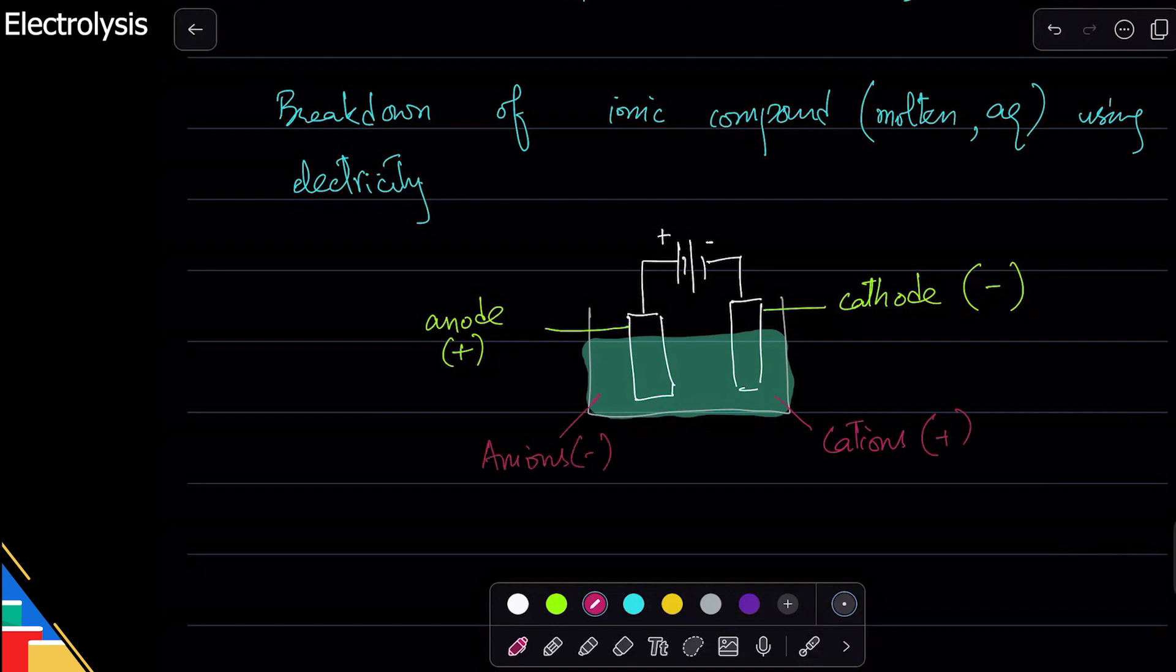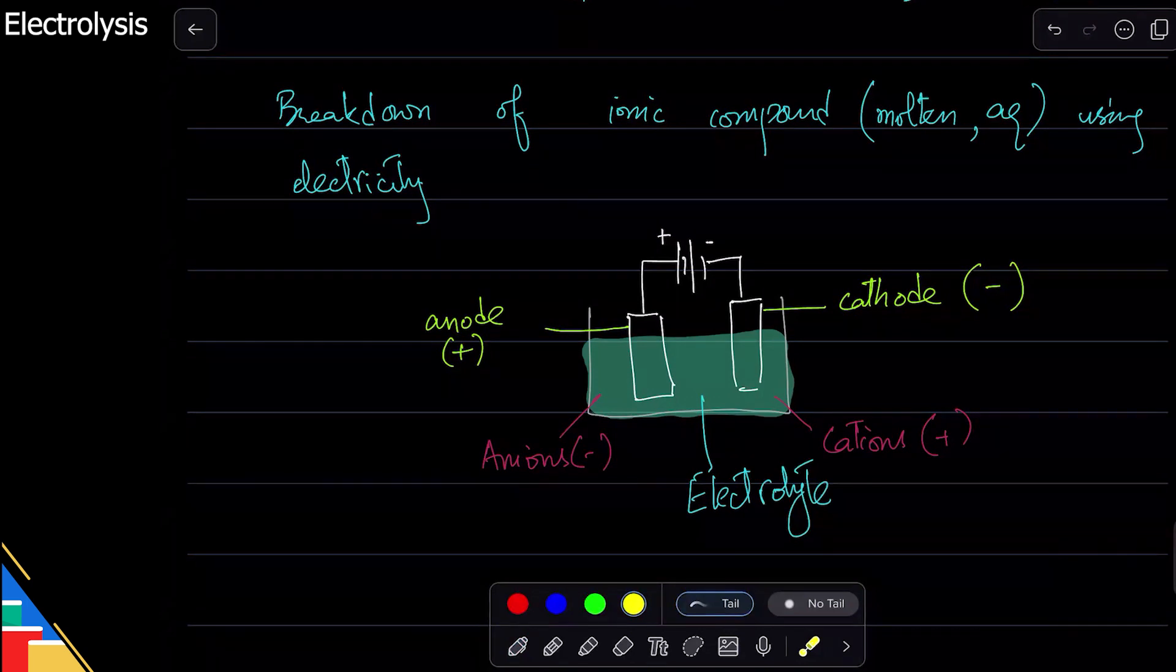Okay, and this whole thing is going to react with this thing which is called electrolyte. So electrolyte is the liquid or aqueous solution that converts electricity, that transfers electricity. It has cations and anions which are then attracted to cathode or anode.